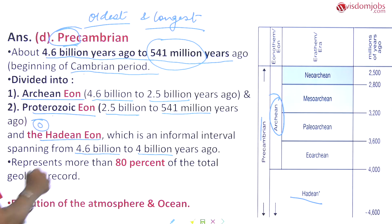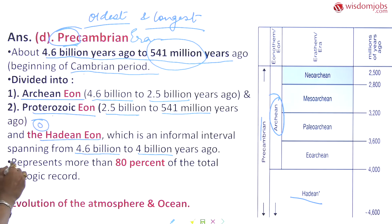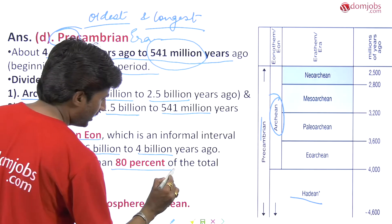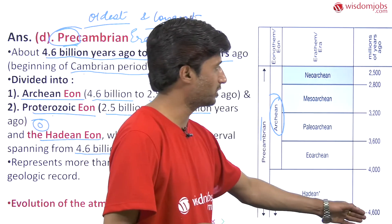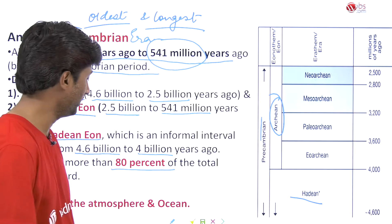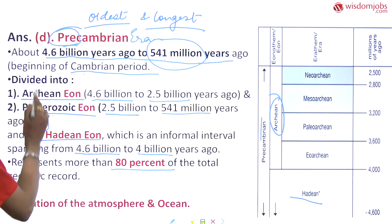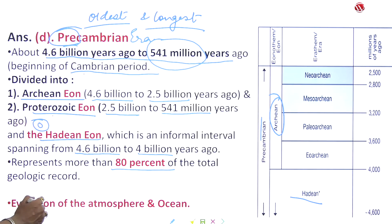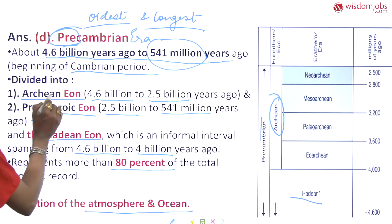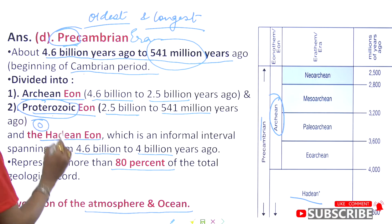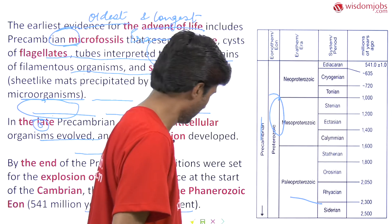The Pre-Cambrian era represents more than 80 percent of the total geological time scale. Spanning from 4.6 billion to 541 million years ago, it is a very long time. During this period, and especially during the Proterozoic Eon, the atmosphere and oceans evolved.